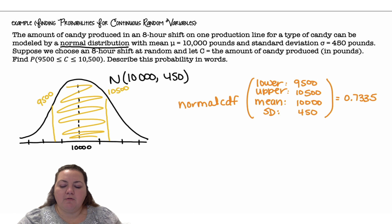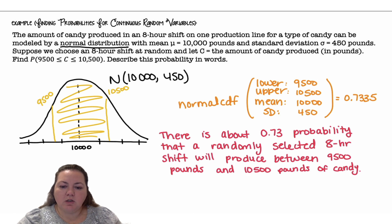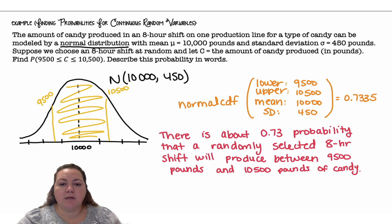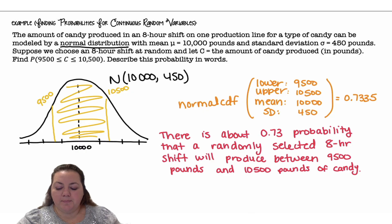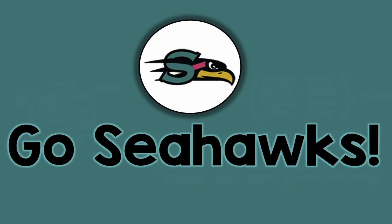I get 0.7335. There is about a 0.73 probability that a randomly selected eight-hour shift will produce between 9,500 and 10,500 pounds of candy. Go Seahawks!